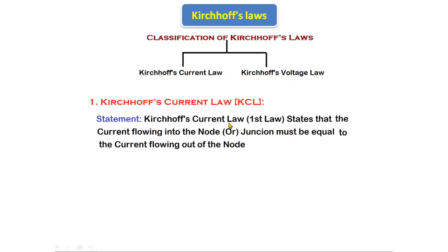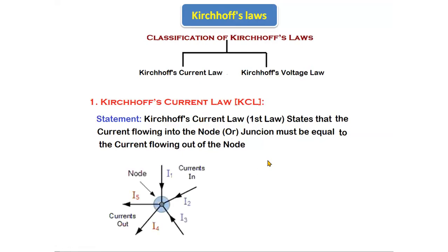The statement of KCL — Kirchhoff's Current Law, the first law — states that the current flowing into a node or junction must be equal to the current flowing out of the node. That is, the sum of the currents entering into the node is equal to the sum of the currents leaving the node. A junction is where two or more branches meet at one point.